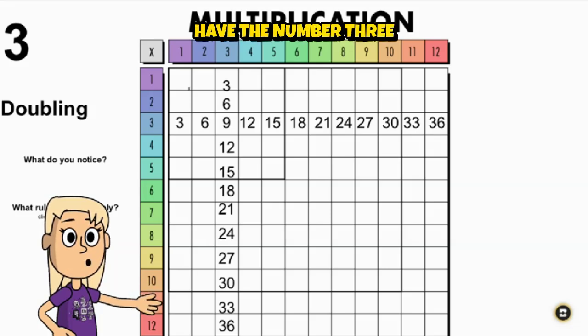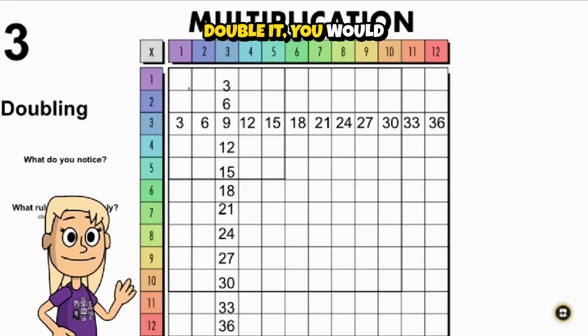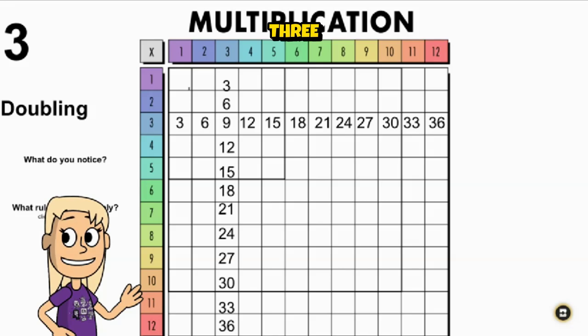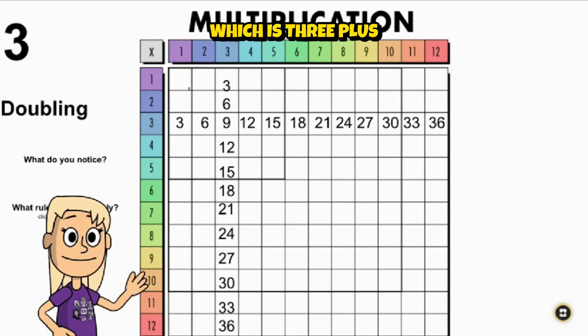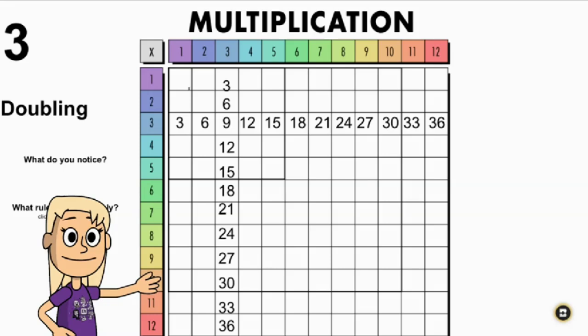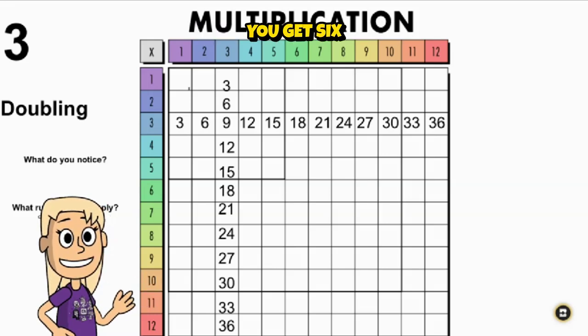if you have the number three and you want to double it, you would do this. Start with the number three and add it to itself, which is three plus three. And this gives you six. So doubling three means you get six.